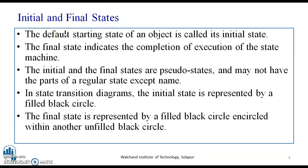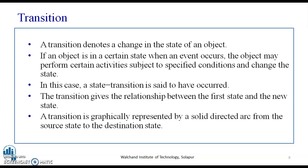There has to be a start and a final state. The default starting state of an object is called the initial state, and the final state indicates the completion of execution of the state machine. The initial and final states are pseudo states — they may not have the parts of a regular state. In the state transition diagram, the initial state is represented by a filled circle, and the final state is represented by a filled black circle encircled within an unfilled circle, also called a bull's eye.